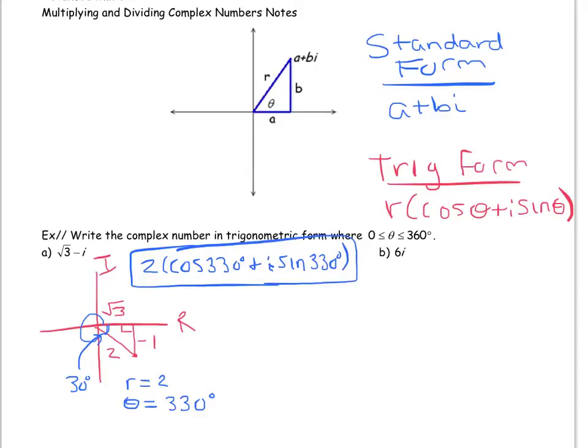How about 6i? 6i we plot, so 6i is just right here. What's our R? Well that's easy. Our R is just the distance from the origin and that's 6. So our R is 6. And what's theta? Well theta is just this angle right here which we know is 90 degrees. So theta equals 90 degrees. In trig form we would write 6i as 6 times cosine of 90 degrees plus i sine of 90 degrees.